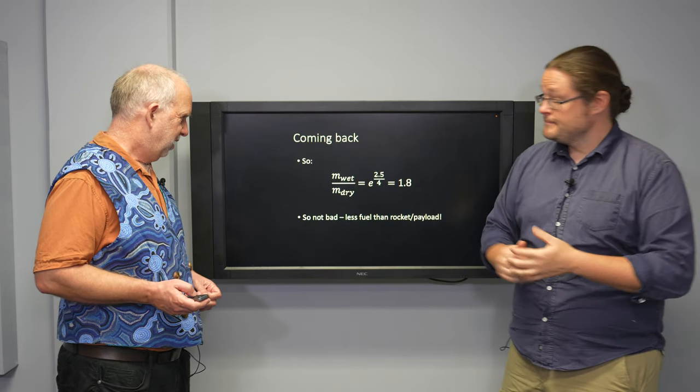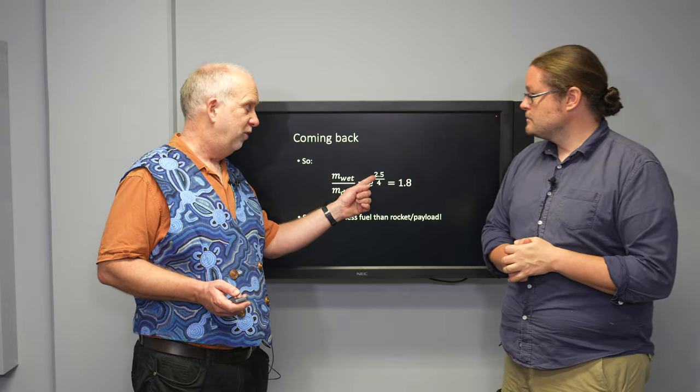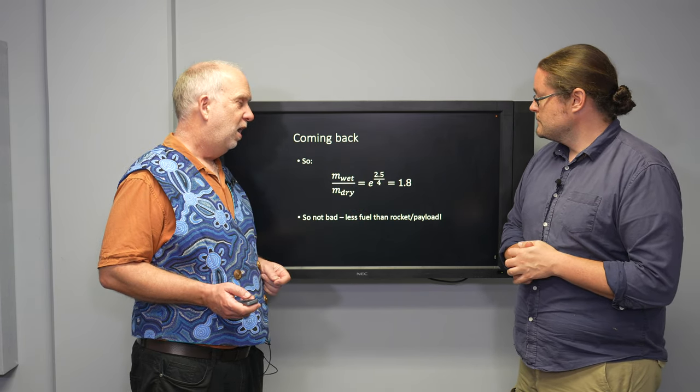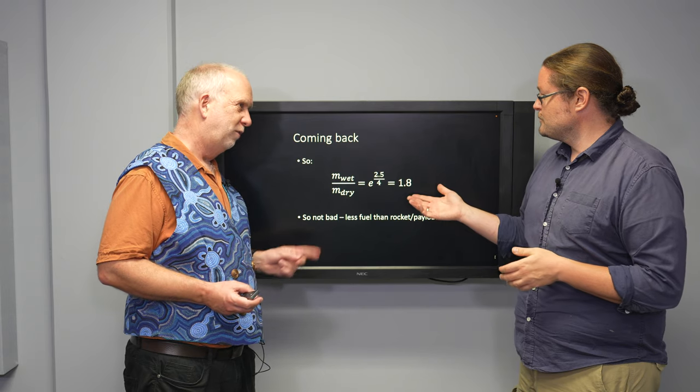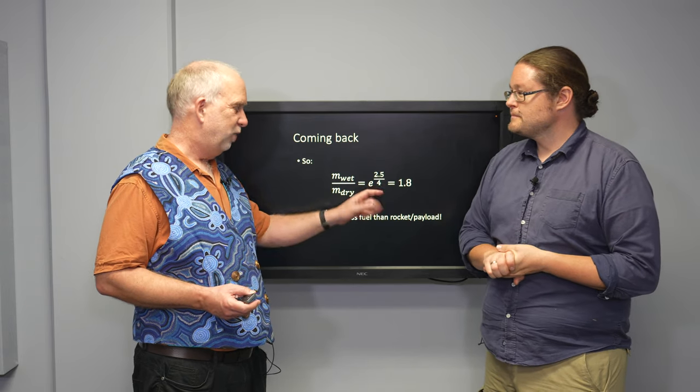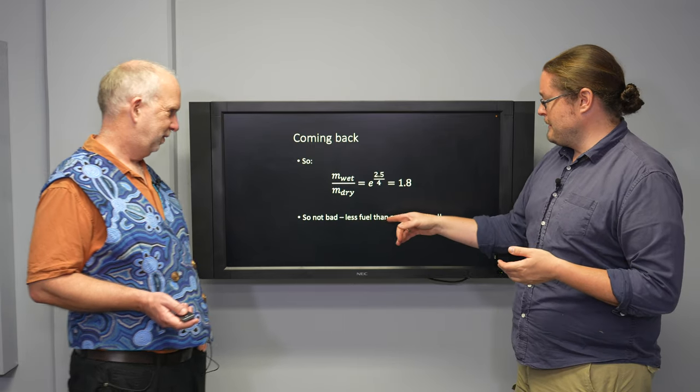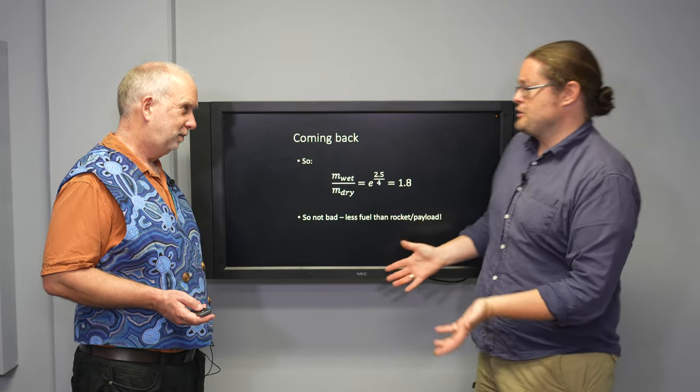Coming back, on the other hand, now we only need to achieve, if we use aerobraking in the Earth, only a delta V of about two and a half kilometers a second. We've got four if you have a hydrogen oxygen rocket, which you probably won't have on the Moon. It'll probably be more like three. But anyway, that's only 1.8 or so. That means you might need 50-50 fuel and rocket. That's actually completely doable.